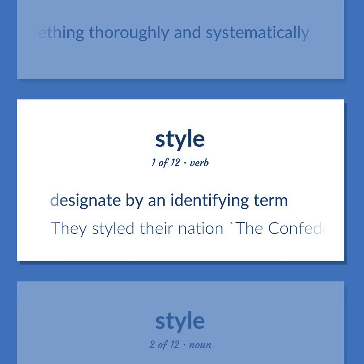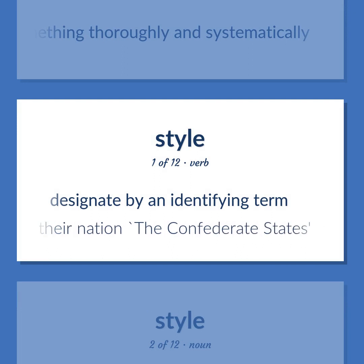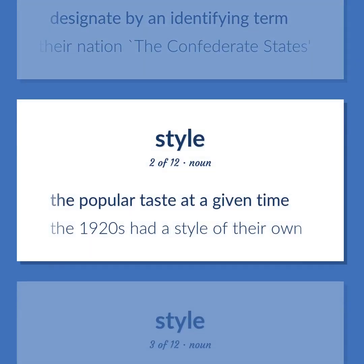Style: To designate by an identifying term. Example: They styled their nation 'The Confederate States.' Also: the popular taste at a given time. Example: The 1920s had a style of their own.